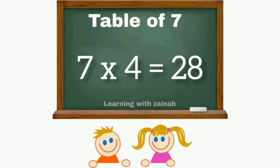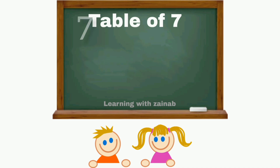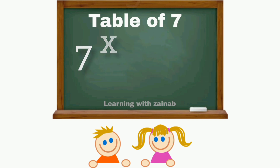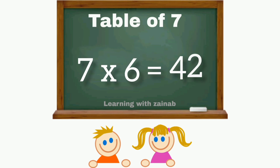Seven fours are twenty-eight. Seven fives are thirty-five. Seven sixes are forty-two.